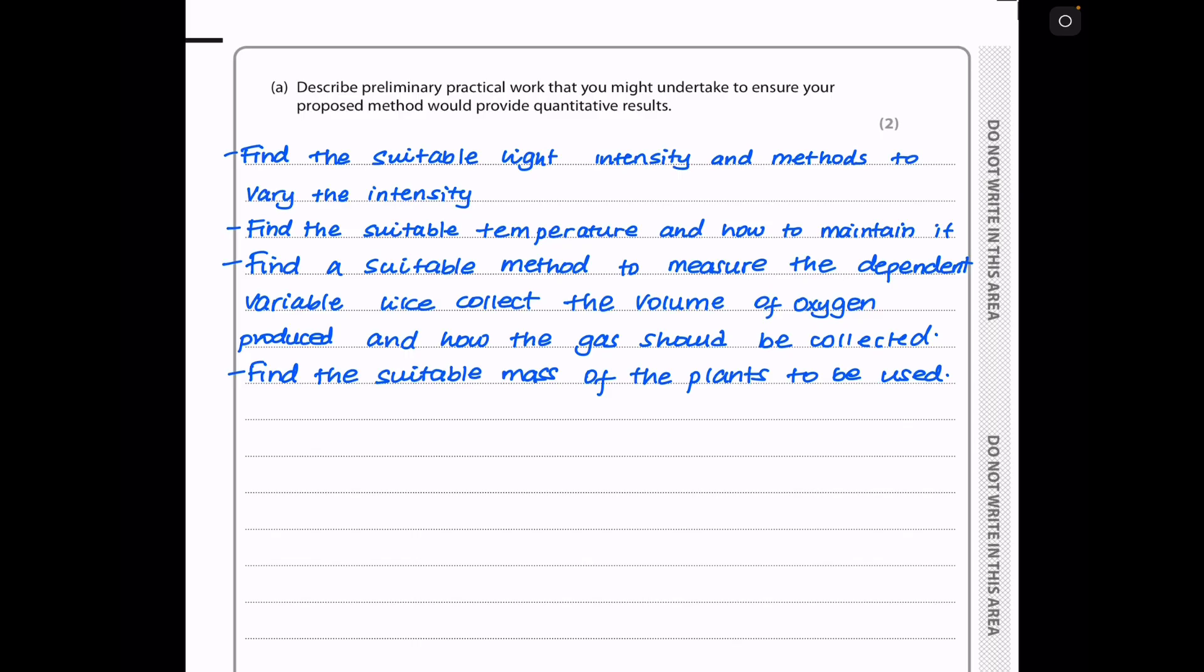In part A, they want you to describe the preliminary practical work that you might undertake to ensure your proposed method would provide quantitative results. In the preliminary practical work, you have to find ways of varying the independent variable. You have to find ways of measuring the dependent variable. You have to find suitable conditions like temperature, concentration of carbon dioxide, and so on, so that you have optimum results. So I said we need to find the suitable light intensity and methods to vary the intensity. We also have to find the suitable temperature and how it is going to be maintained. We have to find a suitable method to measure the dependent variable, like collecting the volume of oxygen produced, and how the gas should be collected, meaning using a syringe and so on. And we have to find the suitable mass of the plants to be used.